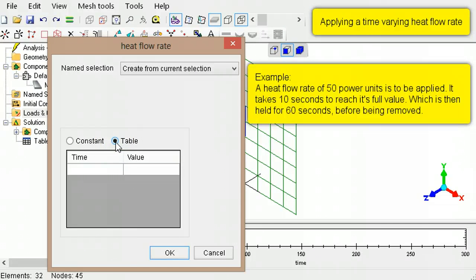As an example, consider a heat flow rate applied in the first 10 seconds of the analysis, then held constant for the next 60 seconds, before being removed.